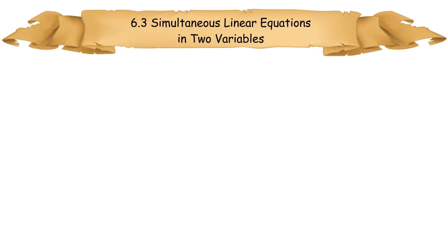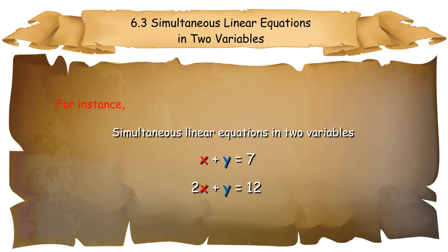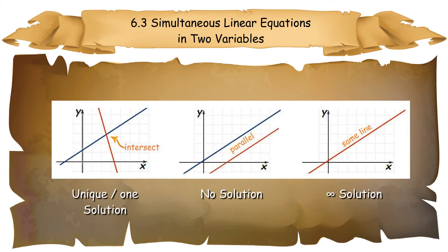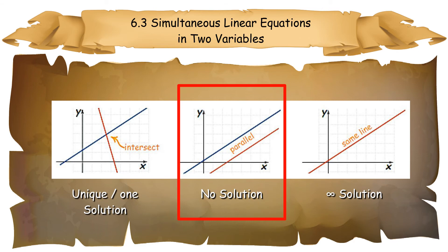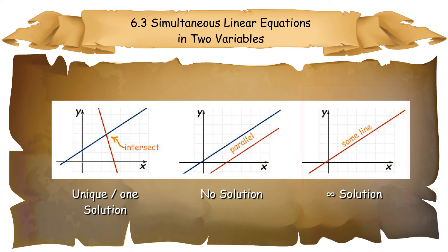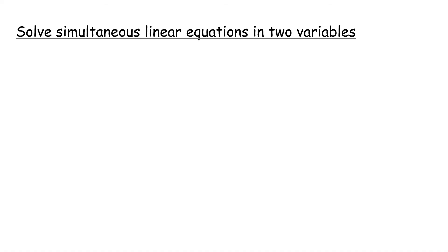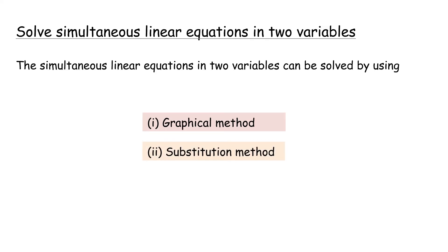6.3 Simultaneous linear equations in two variables. Equations x + y = 7 and 2x + y = 12 are simultaneous linear equations in two variables because both equations have two similar variables. A unique solution occurs at one point of intersection. If the lines are parallel, there is no solution. If the lines overlap, there are infinite solutions. Simultaneous linear equations can be solved using: (1) graphical method, (2) substitution method, (3) elimination method.